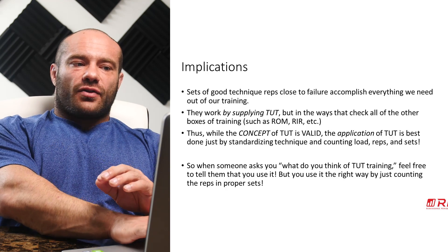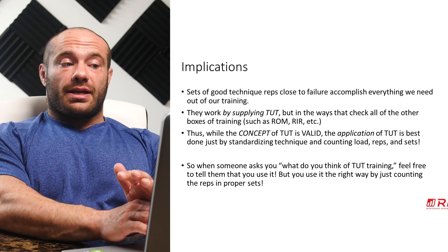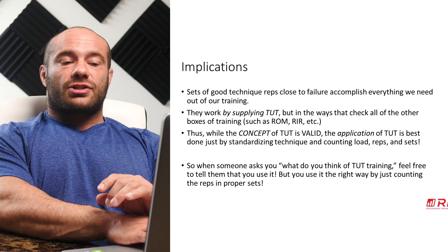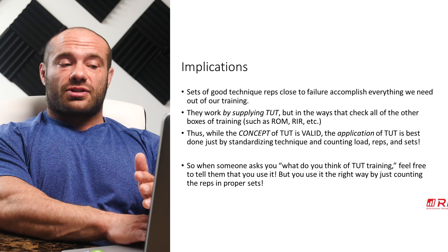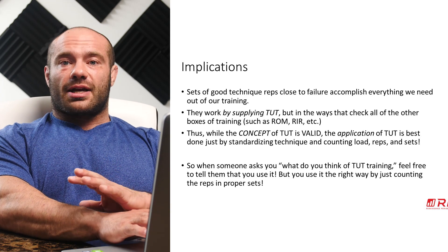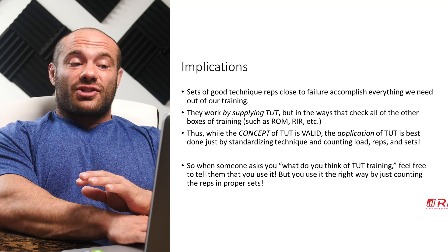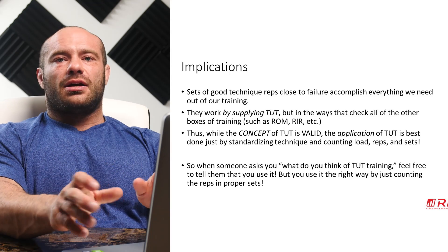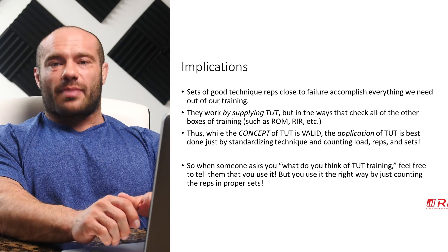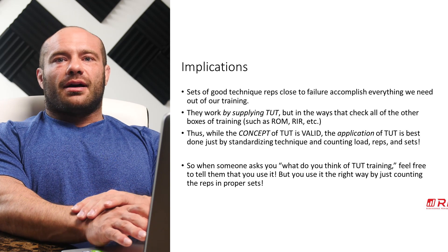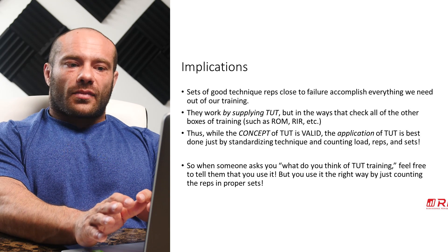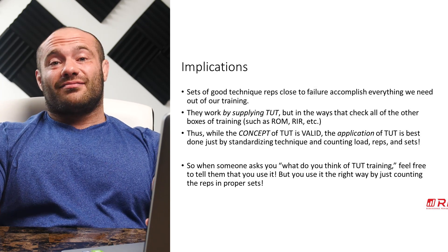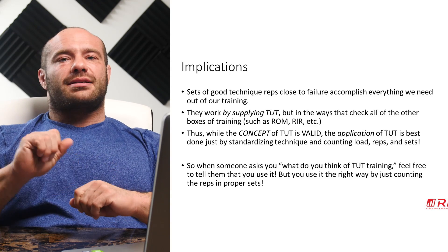So what are the implications? Sets of good-technique reps close to failure accomplish pretty much everything we need from training. They work because they supply time under tension, but in ways that check all the other boxes: range of motion, reps in reserve, different concentric, eccentric, and isometric contraction types, and so on. So while the concept of time under tension is valid, the best application of TUT is to standardize your technique to a good full-range-of-motion technique, count the load, reps, and sets — and automatically TUT results as a box that's checked, in a way that's realistic and checks all the other training boxes. When someone asks you about TUT training, you can say you use it — but the way you do it is just counting reps in properly executed sets.